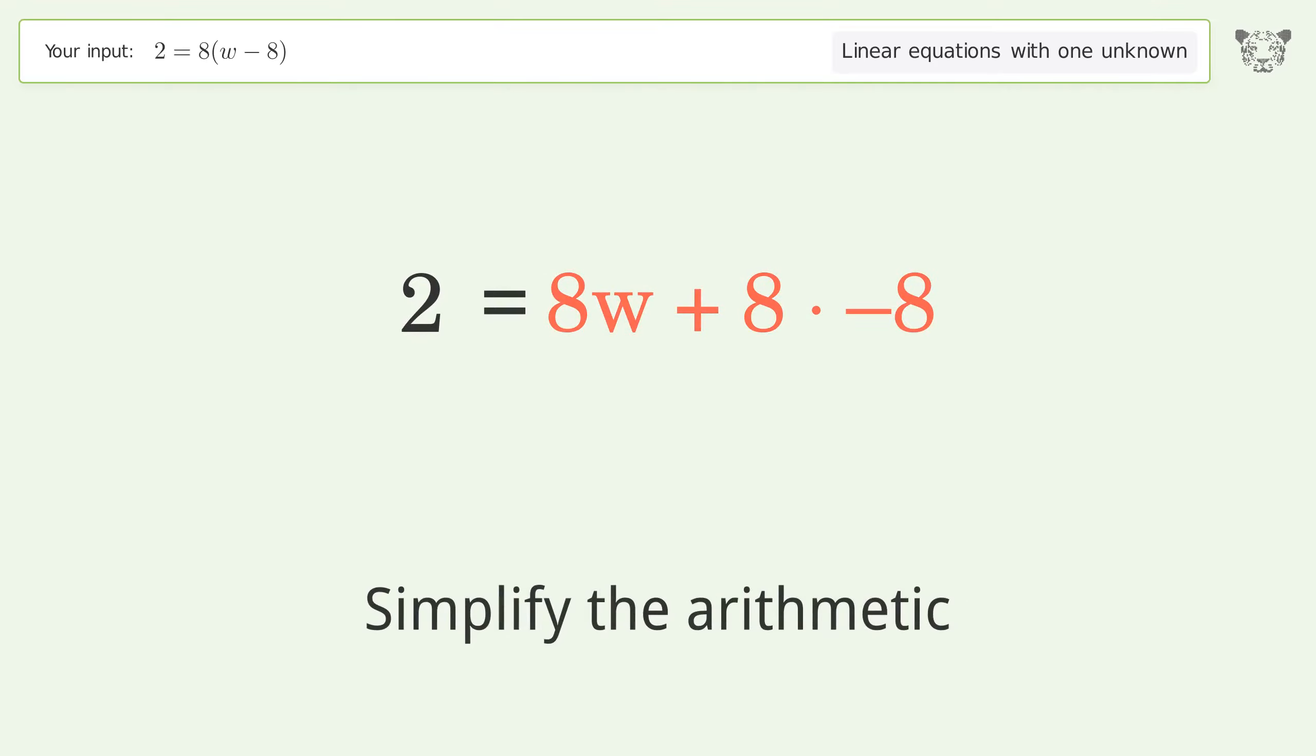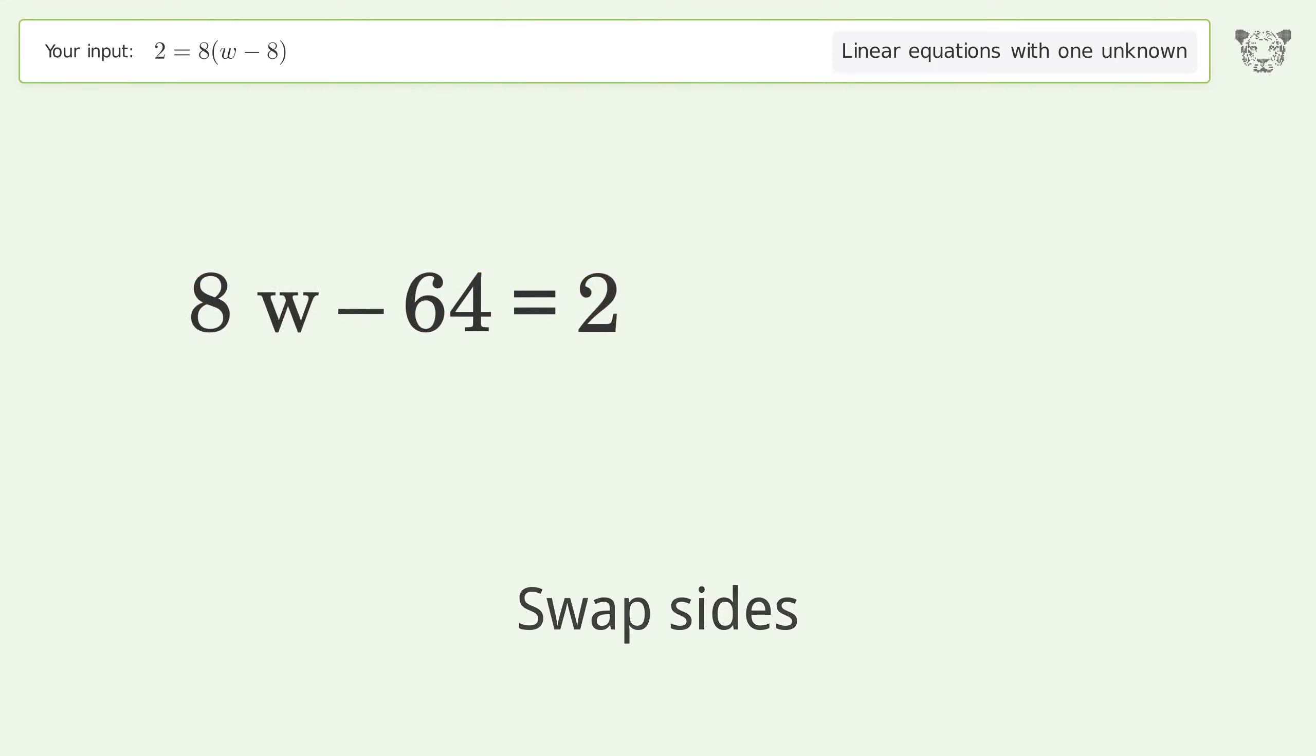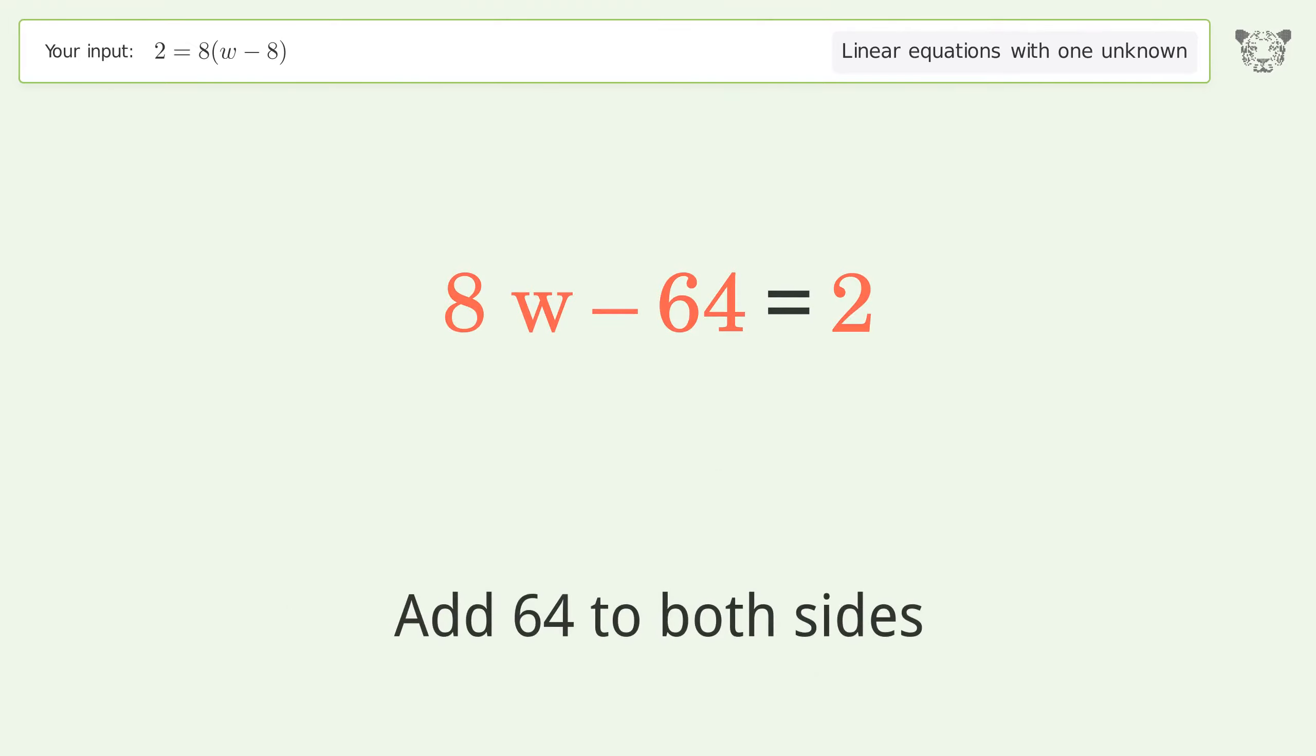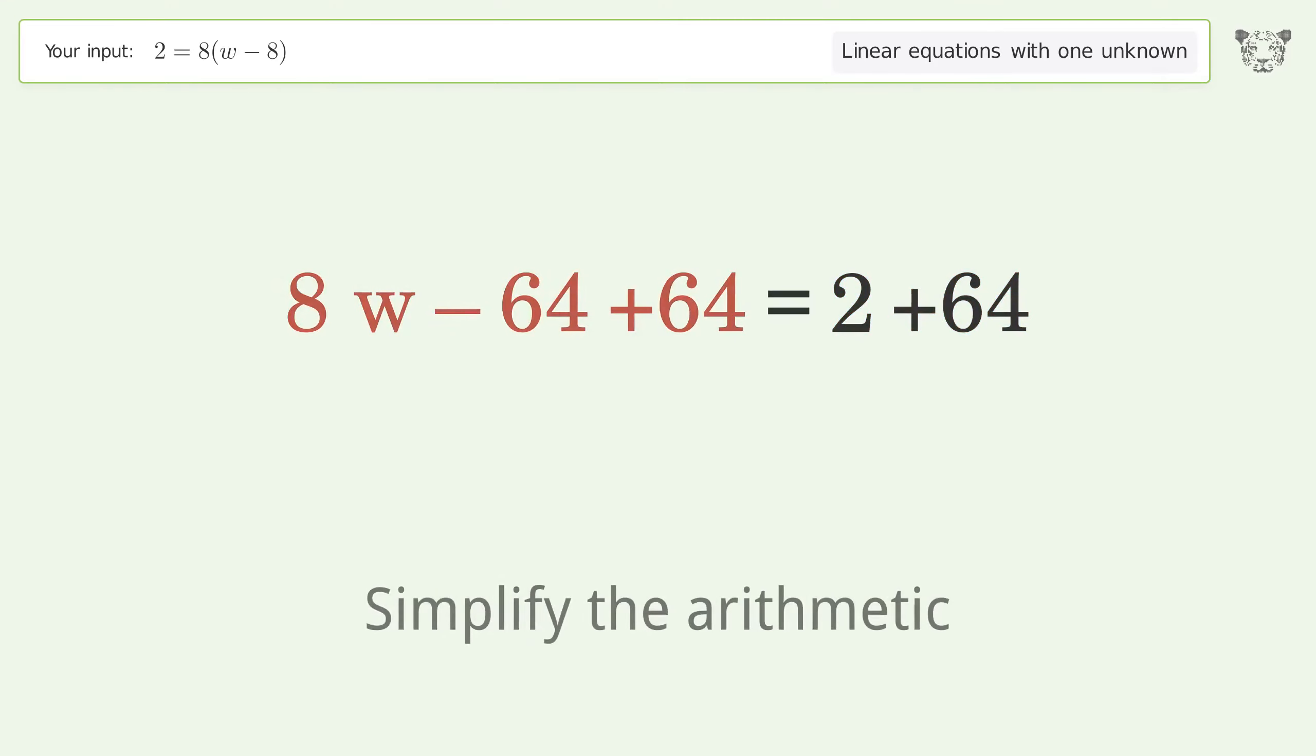Simplify the arithmetic. Swap sides. Group all constants on the right side of the equation. Add 64 to both sides. Simplify the arithmetic.